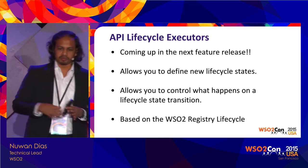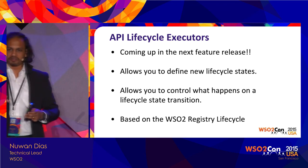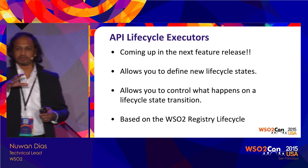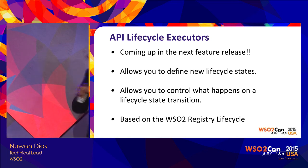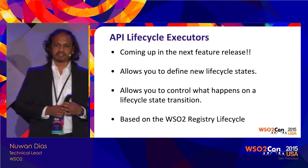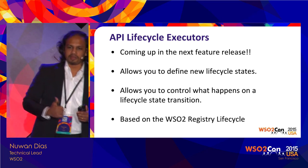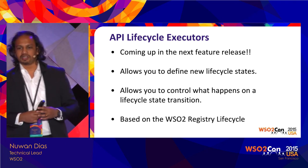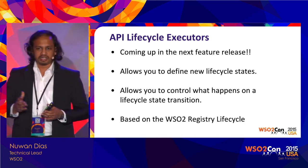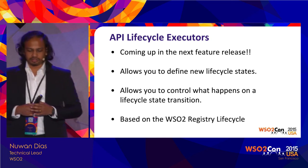Now we come to an interesting part: API lifecycle executors. Previously in the API Manager, we had a lifecycle that was pretty static — we didn't consume the registry lifecycle available in the platform, so the lifecycle steps were static and you didn't have much control over what happened when moving from state to state. In the next feature release, we are using the registry's lifecycle executor, which gives you complete control of your lifecycle execution — you can introduce new steps and control what happens during particular state transitions.